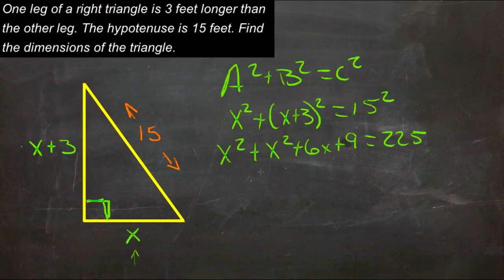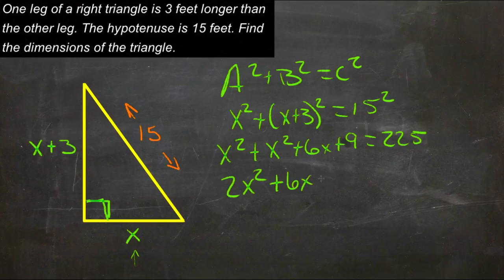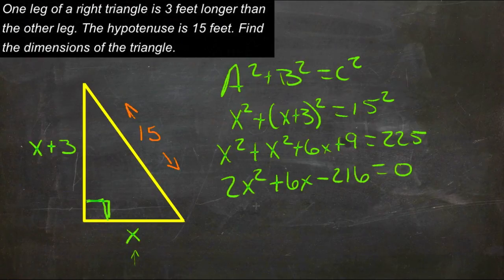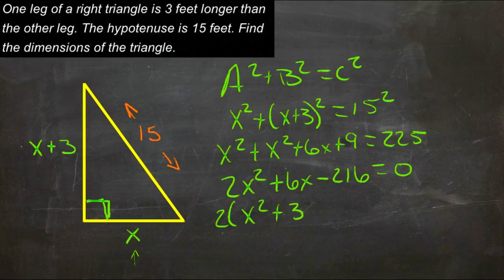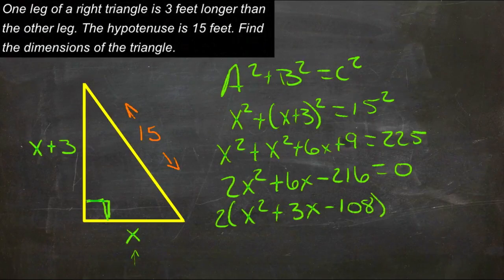Then we'll bring the 225 over and combine our x squareds, and we'll get 2x squared plus 6x minus 216 equals 0. Now we can factor out the 2, so we'll get 2 times (x squared plus 3x minus 108) equals 0.